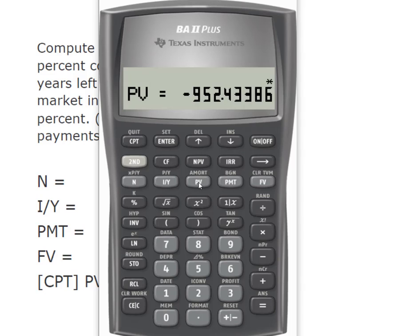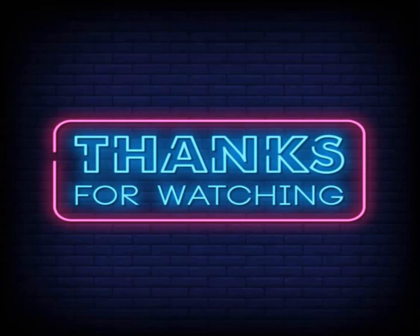So the present value of that bond is $952.43 and that would make it a discount bond. Remember that when a bond sells for less than its original par value, it's a discount bond. So I hope that you found that useful and thanks for watching.